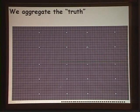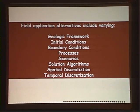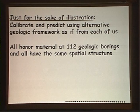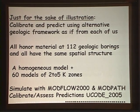First we'd have to aggregate the truth—take this detailed system and coarsen it to do our work. In the field we'd look at many different alternatives: different geologic frameworks, different initial and boundary conditions, different processes and scenarios, even solution algorithms or discretization. For this example we'll just think about varying the geologic framework. It's as if each one of us took 112 geologic boring data and we all know the spatial structure. I brought a homogeneous model and 60 different models with 2 to 5 zones of hydraulic connectivity. These are simulated with MODFLOW 2000 and MODPATH, calibrated, and predictions assessed using UCODE 2005.